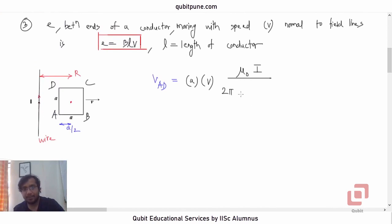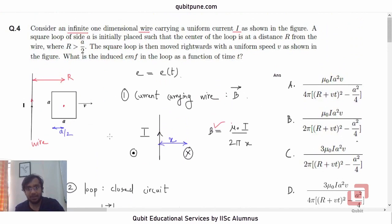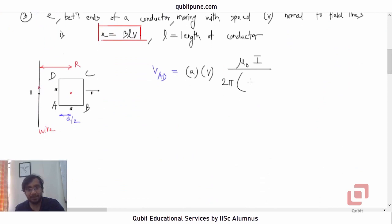Now observe that, initially the distance was R. They are saying, initially placed at a distance R. What? The center of the loop. The center of the loop is initially at R. Now, if time T has elapsed after the movement began, then by how much amount will AD have moved? R plus VT from the wire.